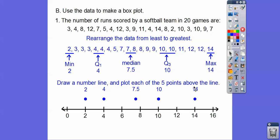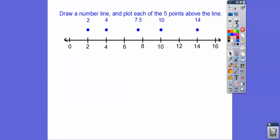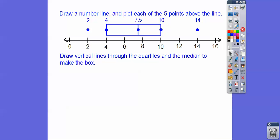We need to make a number line that's going to represent all those numbers from 2 all the way up to 14. I drew the number line and then plotted each of the 5 numbers. So the box comes from the quartiles and the median, so we're going to draw vertical lines to represent the box. Then the whiskers extend out to the range numbers, the minimum and the maximum. There's our groovy looking box and whisker plot.